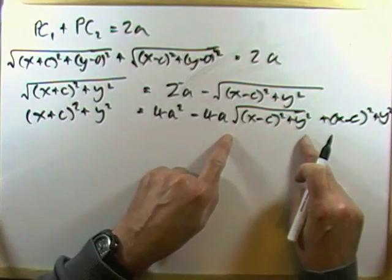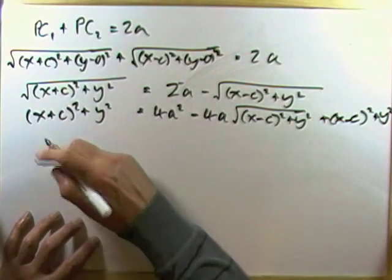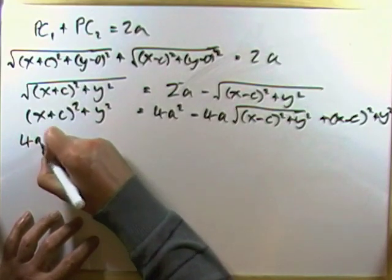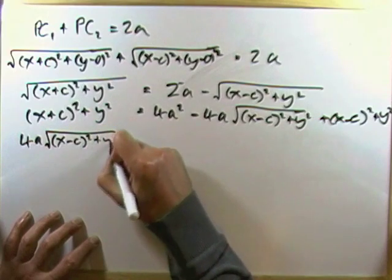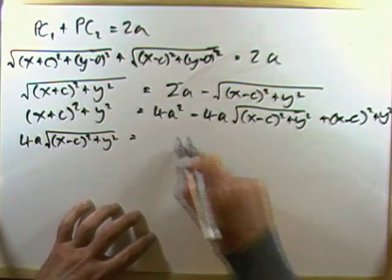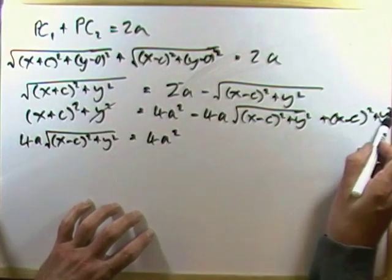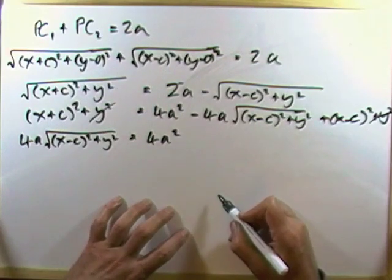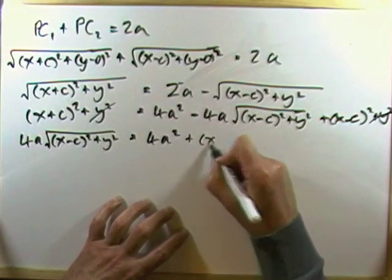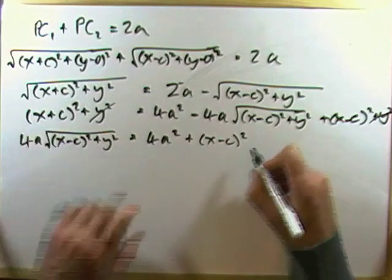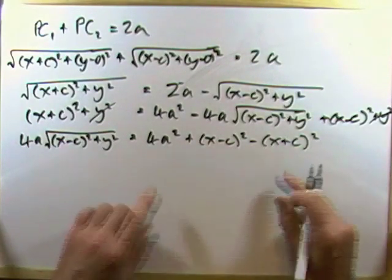Next part, isolate this square root so it can get dealt with separately. So, I'll take this over here. 4a times the square root of x minus c squared plus y squared will equal whatever's left here. I've got my 4a squared. Luckily, I can get rid of some of the terms. They can go. So, I'm left with an x minus c squared, subtract an x plus c squared.